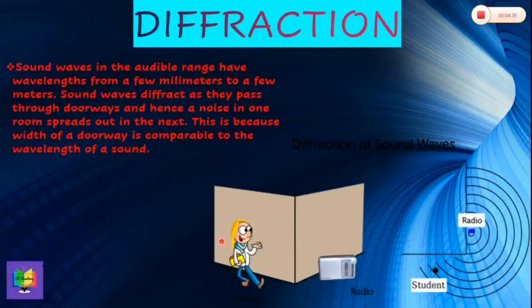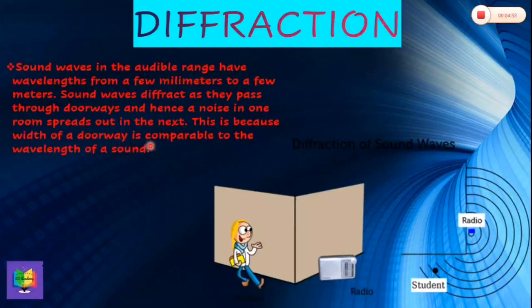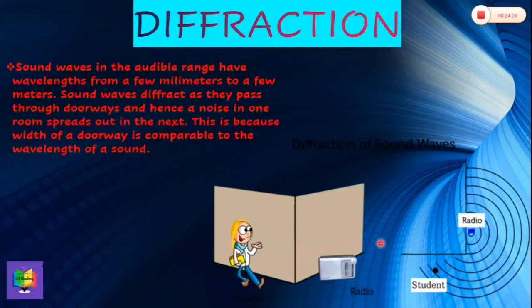Sound waves in the audible range have wavelengths from a few millimeters to a few meters. Sound waves diffract as they pass through doorways, and hence the noise in one room spreads out into the next room. This is because the width of a doorway is comparable to the wavelength of sound — that is, the condition for diffraction is fulfilled.